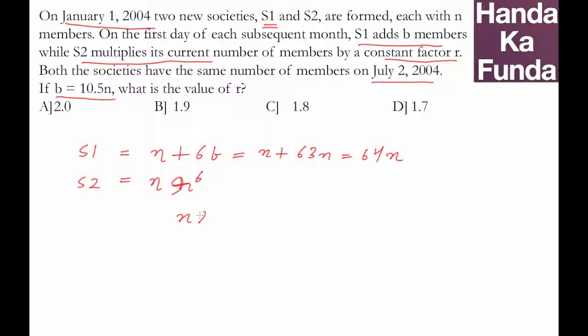The number of members in S1 and S2 is equal, which means n·r^6 equals 64n. Canceling n, we get r^6 equals 64. The value of r is 2.